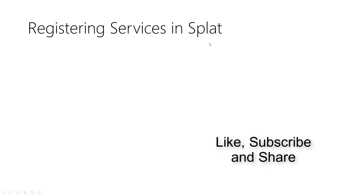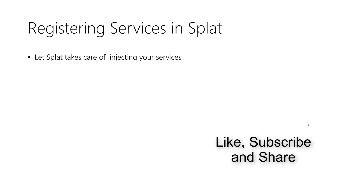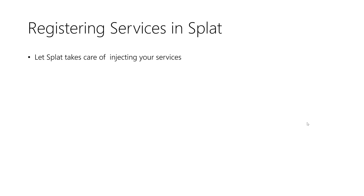Now the second thing I want to talk about is Splat and ReactiveUI. Splat is a service locator provided by ReactiveUI framework - it helps you do multiple things. One of the things it does is help you register your services. It takes care of initializing objects for you and injecting the services. You create your services - for example, IEmailService, SmsService, LocalDataProvider, RemoteDataProvider - you register all the services in one specific place.